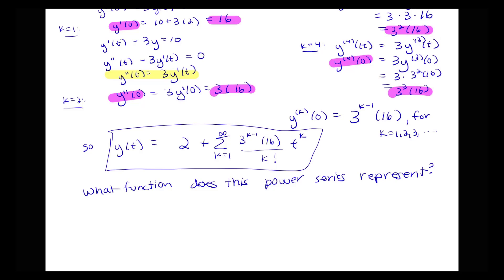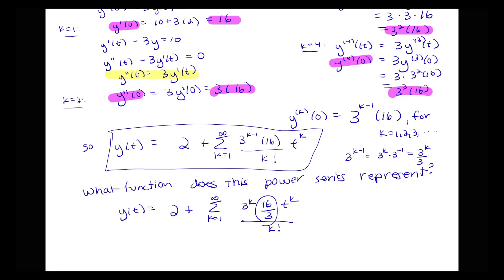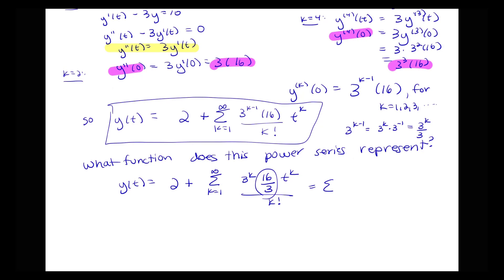Let's rewrite the series. We can rewrite y(t) as 2 plus the sum where 3 to the (k minus 1) is rewritten as 3 to the k times 3 to the minus 1, or 3 to the k over 3. This gives 2 plus the sum from k equals 1 to infinity of 3 to the k times 16 over 3 times t to the k over k factorial. Bringing 16/3 out front, we get 2 plus (16/3) times the sum of (3t)^k over k factorial.